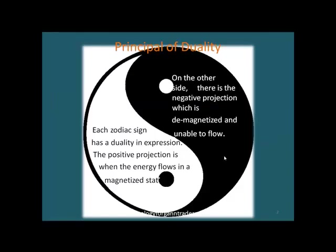GAN often writes about everything having a positive and negative side, and this is called the Principle of Duality. The yin-yang symbol represents this male and female energy, or light and darkness, and each zodiac sign has a duality in expression. The positive projection is when the energy flows in a magnetized state, and on the other side there is a negative projection, which is demagnetized and unable to flow.